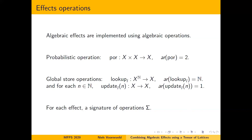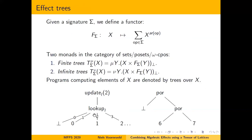We gather these operations together in an effect signature. For probabilistic computation we have only one operation, while for global store we have these two operations. Once we have all these operations we can describe the free monad of programs using a functor which gathers up all possible continuations available when we have a bunch of operations.